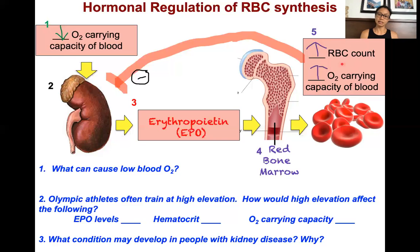When this oxygen carrying capacity is increased to meet the metabolic demand, this should go back and negatively feedback and turn off the endocrine gland — the kidney — to tell the kidney that EPO is no longer needed.